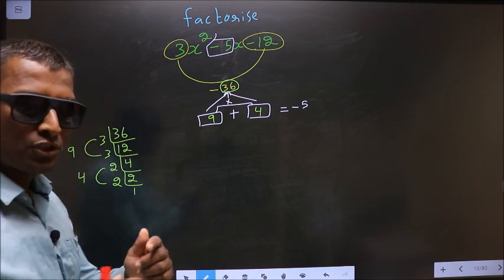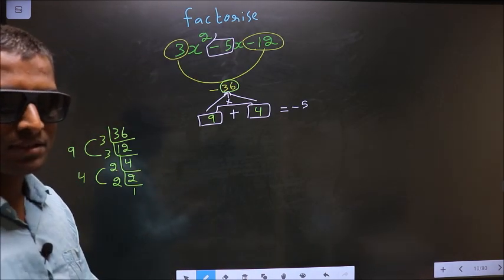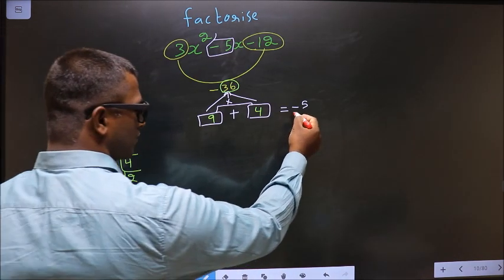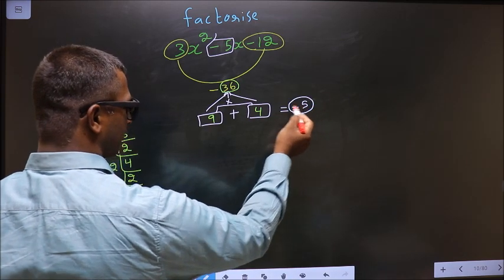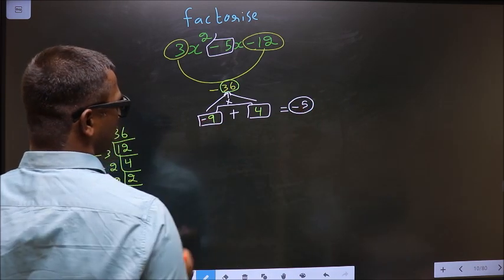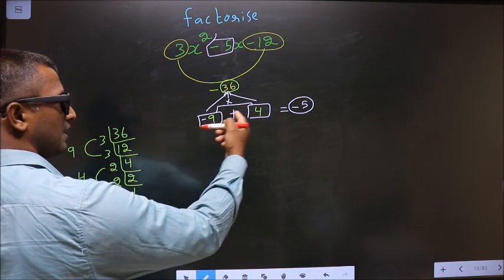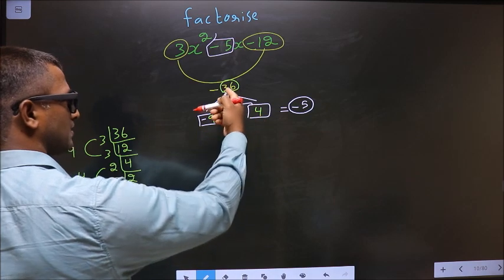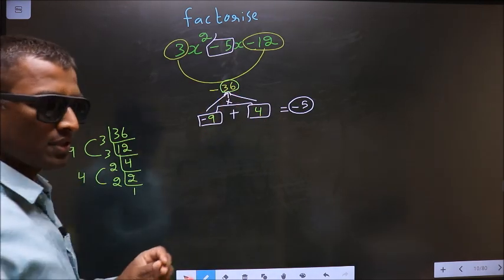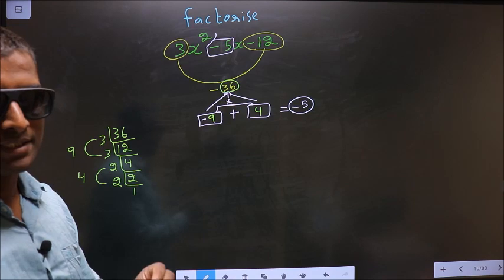Now you should adjust the signs. Here you should get -5. This could only happen if you put minus before 9. -9 plus 4 is -5, -9 into +4 is -36. So now the signs are also adjusted.